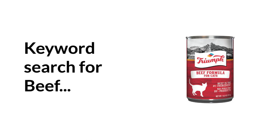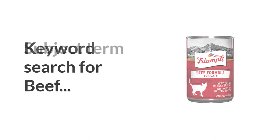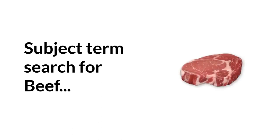Subject term searching is a little different. Subject terms are attached separately by catalogers who look at the article or item and try to determine what the article is actually about. Once they know that an article is about a particular topic, they use a predetermined vocabulary that they attach to the record. That means when you search specifically for a subject term, you have the added value that human intelligence has determined that this article really is about beef, rather than just having that keyword somewhere in the metadata.